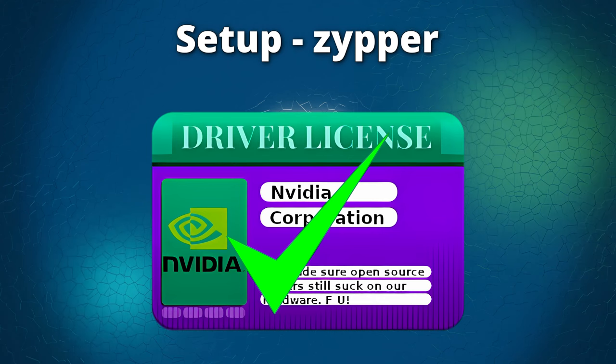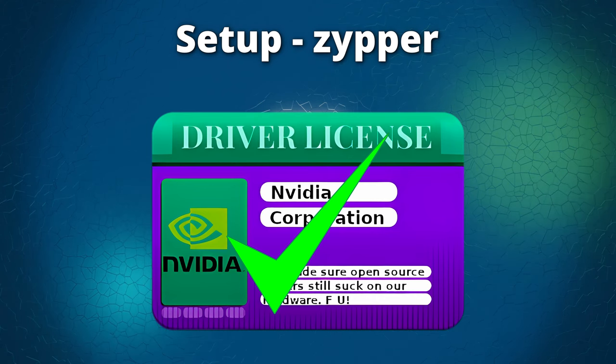This configuration is required to allow Zypper to auto-agree to the NVIDIA end-user license agreement, as this is denied by default. Without it, this would also break the auto-update of EON Desktop. Therefore, we allow Zypper to accept the license by itself.